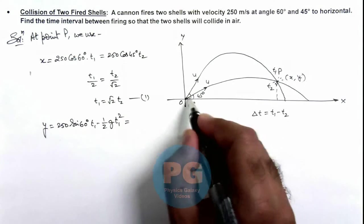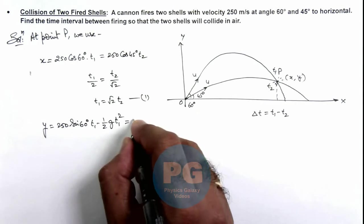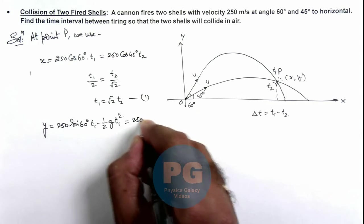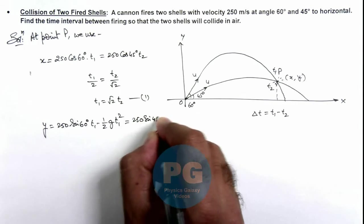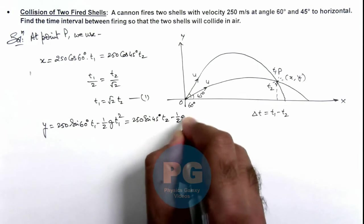And the one which is thrown at 45 degrees takes time t₂ in reaching P, so for this we can write 250 sin 45° × t₂ minus ½g t₂².